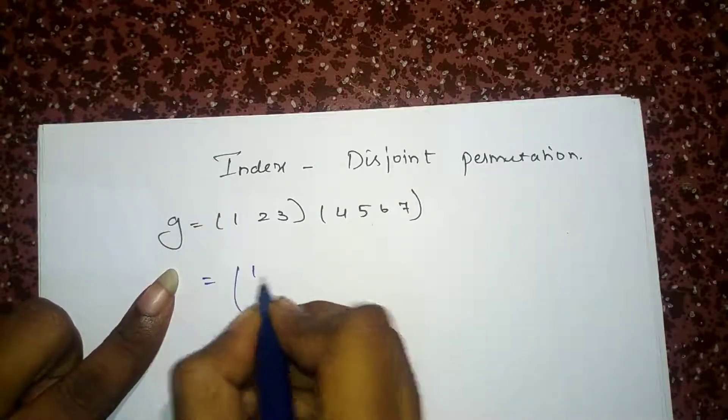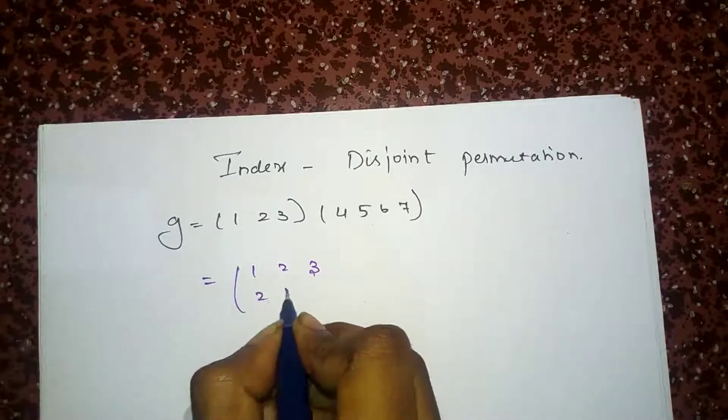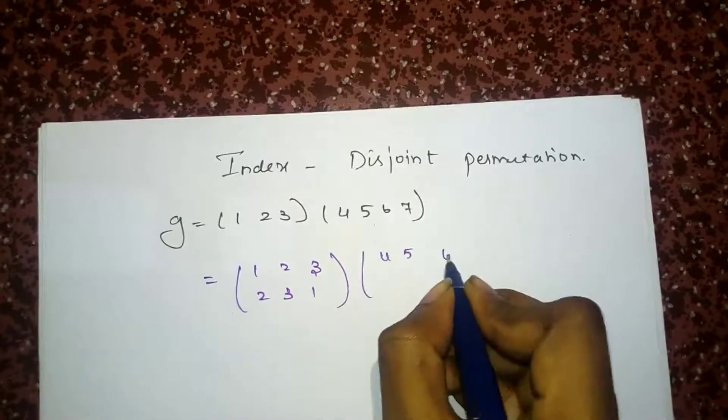We will be finding the composition of these two permutations, 2, 3, 1 and 4, 5, 6, 7.